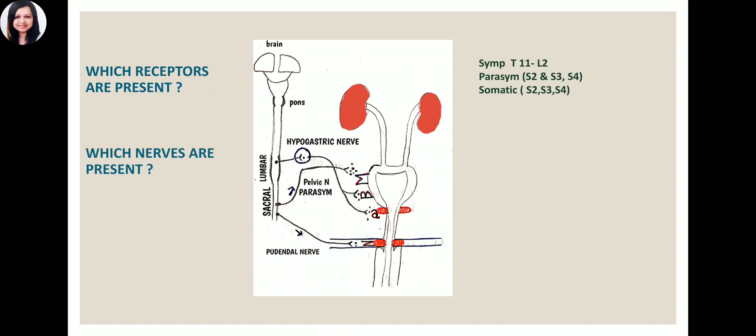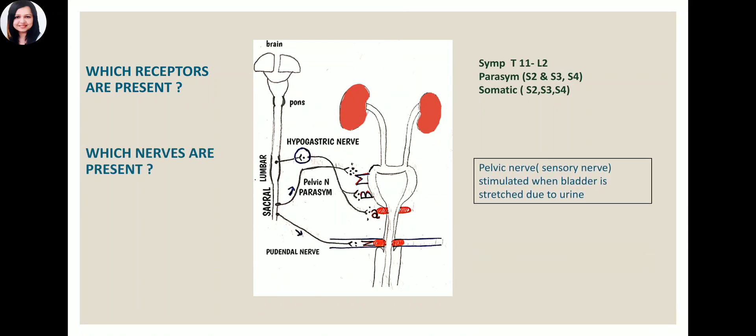The third nerve is the sympathetic hypogastric nerve, with fibers from the T11 to L2 thoracolumbar area. It releases noradrenaline, which binds to beta-3 receptors on the detrusor and causes relaxation of the detrusor muscle. Afferent signals about bladder volume are transmitted from the urinary bladder to the spinal cord via afferent pelvic nerve fibers. Stretch receptors sense the amount of fluid in the bladder and send signals to the spinal cord and brain.